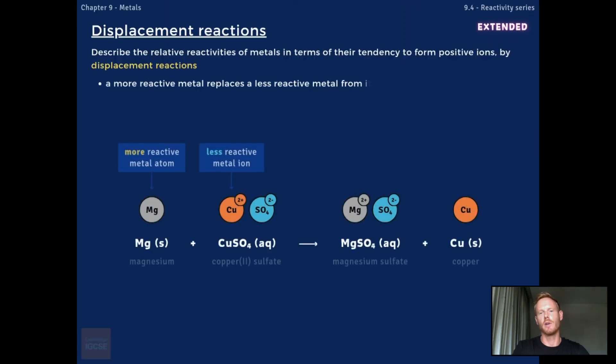A metal displacement reaction is a reaction in which a more reactive metal displaces or pushes out a less reactive metal from its compound when in aqueous solution. After a displacement reaction, the less reactive element is pure and uncombined. This occurs because the more reactive metal has a greater tendency to lose its outer electrons and form positive ions than the less reactive metal.